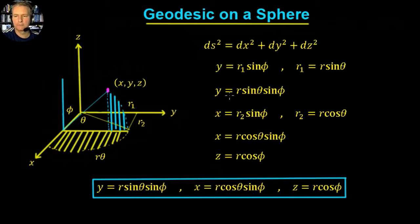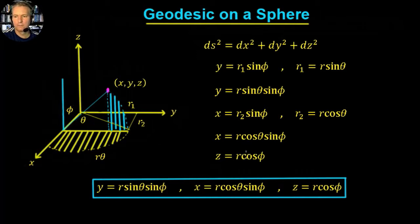You can do a similar thing with the x value and you'll get r2 equals r cos theta, and x equals r2 sine phi, so finally x equals r cos theta sine phi. The z component is a bit easier — the height here is just given by z upon r equals cos phi, so z equals r cos phi. Finally we're left with: y = r sine theta sine phi, x = r cos theta sine phi, and z = r cos phi.